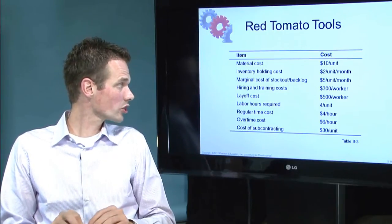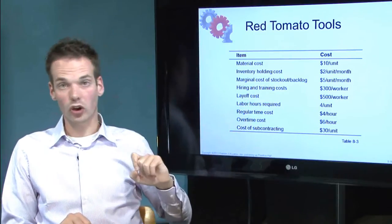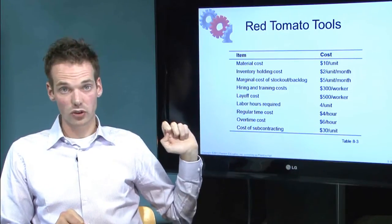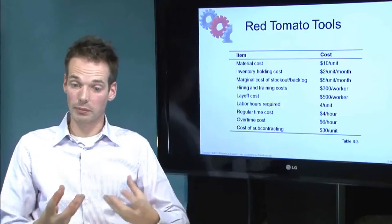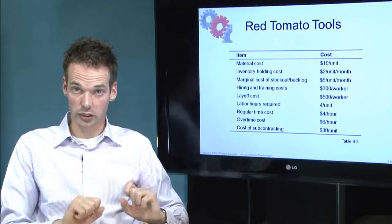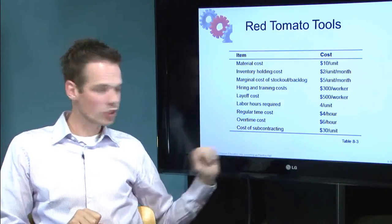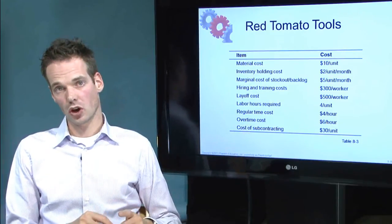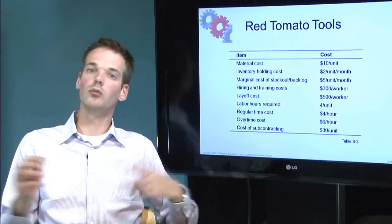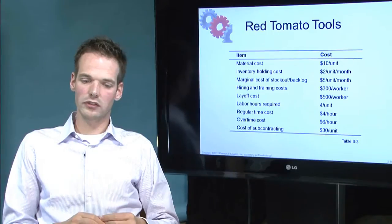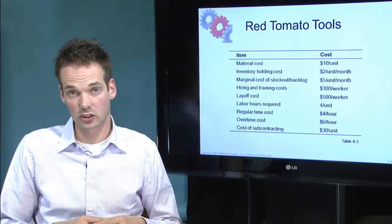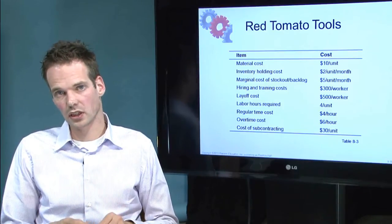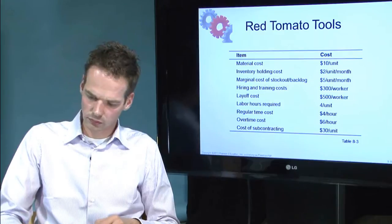The hours required are per unit, not for a whole batch but only for one unit. Regular time cost, overtime cost — which applies to the time flexibility strategy — and the cost of subcontracting if your company would like to use subcontractors. Management can also decide not to use subcontracting; a reason for that can be intellectual property or intellectual property theft, for example.